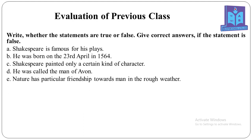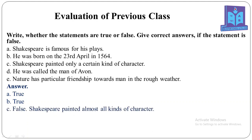There are five statements here. The first one: Shakespeare is famous for his plays — it's true. You just write 'true'; you should not reproduce the whole sentence in your answer script. Number B: He was born on the 23rd April in 1564 — true. Statement C: Shakespeare painted only a certain kind of character — it's false. The correct answer is Shakespeare painted almost all kinds of character.